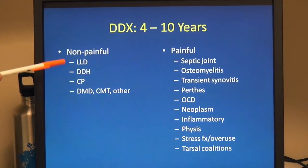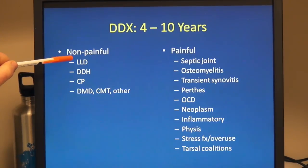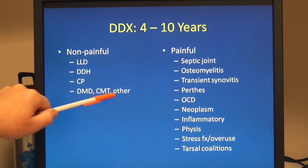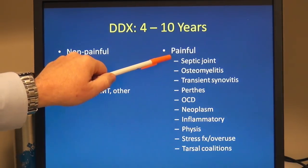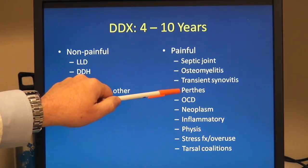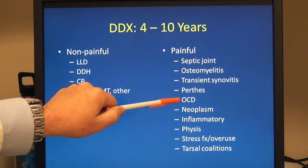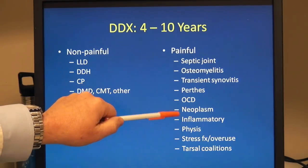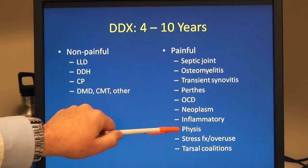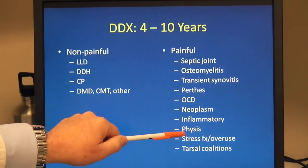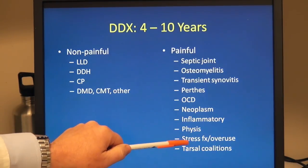In the slightly older child, for non-painful causes: limb length discrepancies sometimes not identified until this age, unfortunately still late-diagnosed hip dysplasia, subtle hemiplegias more commonly identified now, and some neuromuscular disorders beginning to appear. For painful causes, much the same list — we now add transient synovitis and Perthes. Osteochondral defects, more commonly in the knee and ankle, begin to show up. With children becoming more active in organized sports, stress fractures and overuse injuries start appearing. Tarsal coalitions often become symptomatic toward the end of this age range.